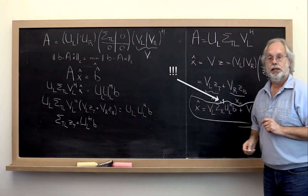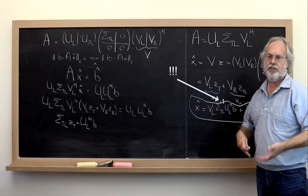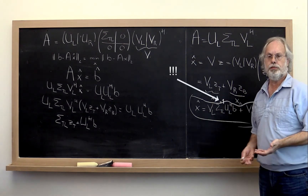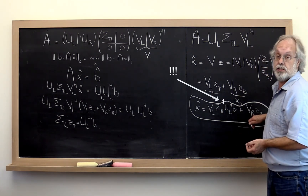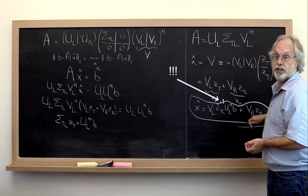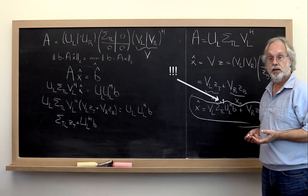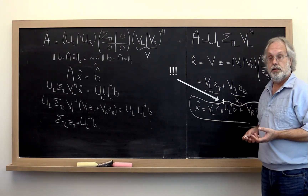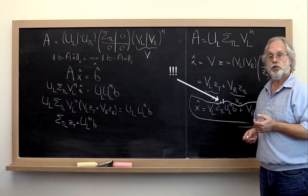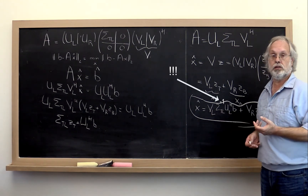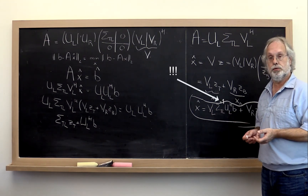Since we now have an infinite number of solutions — as long as the null space is not just the zero vector — which one should we pick? You're going to go through some homework problems that guide you towards what might be a reasonable answer to that.